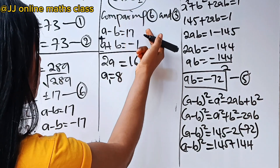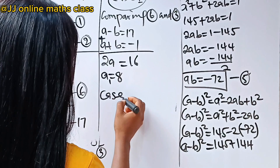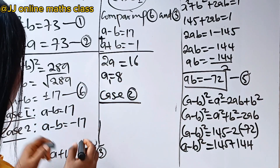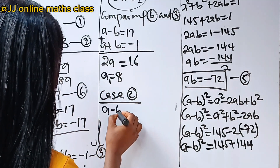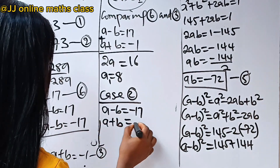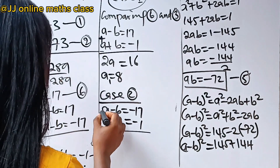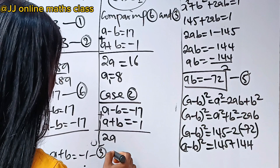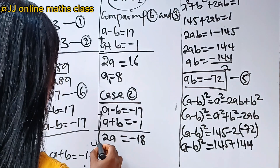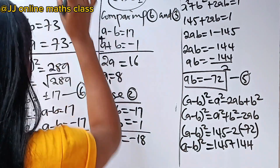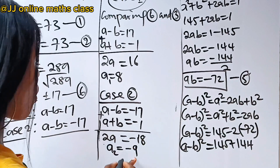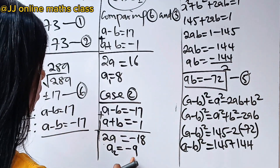For case 2, let's find a2. We have a minus b equals minus 17, and from equation 3, a plus b equals minus 1. Adding both equations: 2a equals minus 17 minus 1, which gives 2a equals minus 18, so a2 equals minus 9. We have now found a1 and a2.